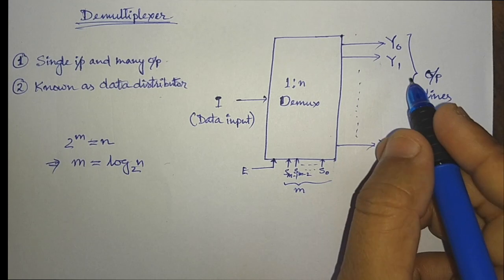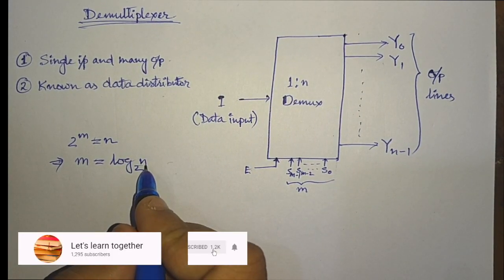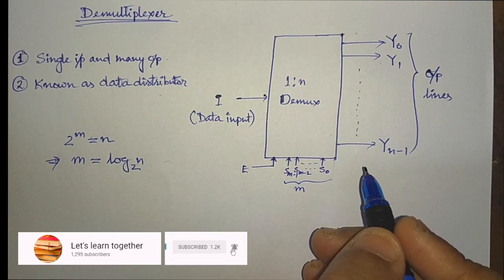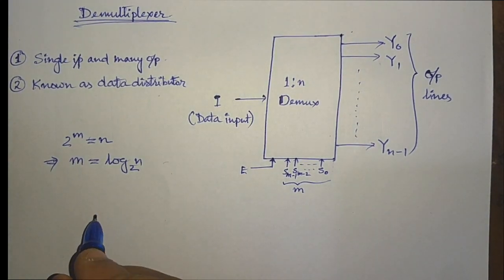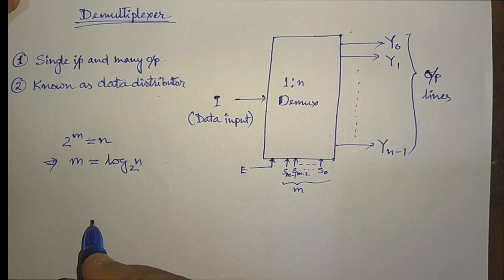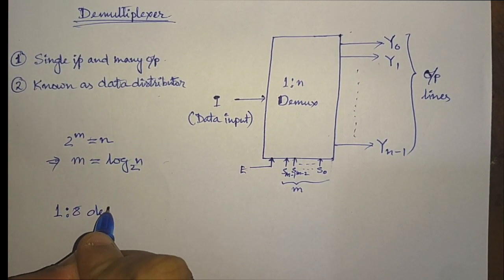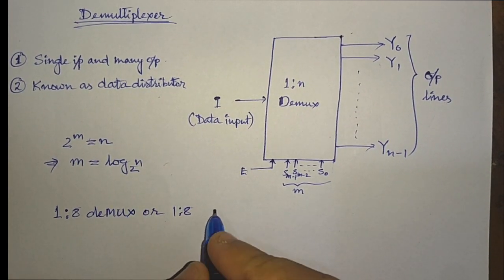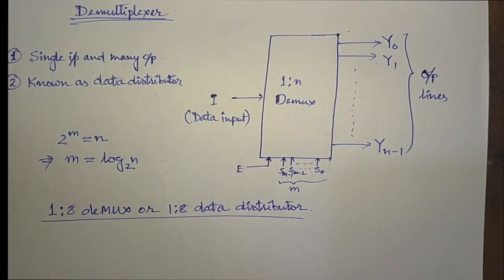For example, if we have 4 output lines then m = log₂(4) = 2, so we require 2 select lines. Now let us start with an example — we will discuss a 1-to-8 demultiplexer, also called a 1-to-8 data distributor. Let us draw the block diagram of it.